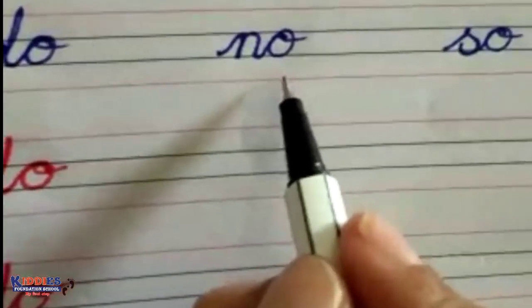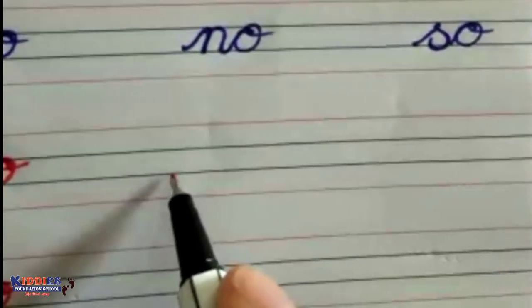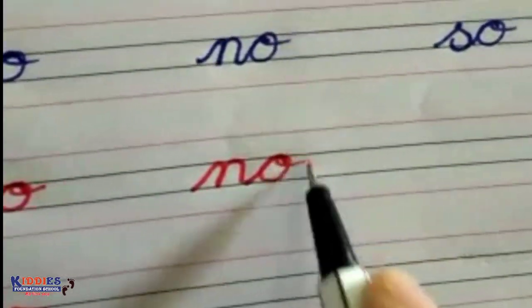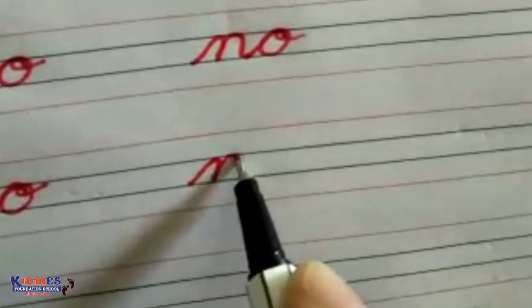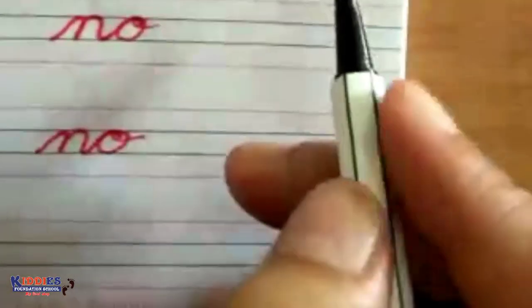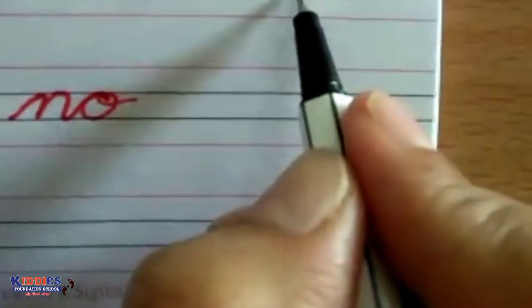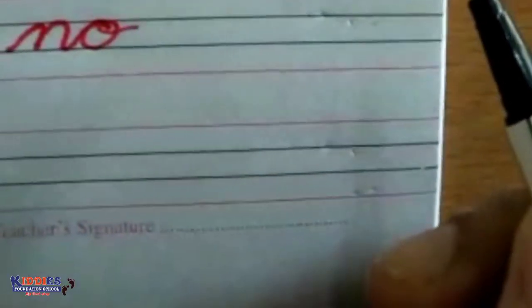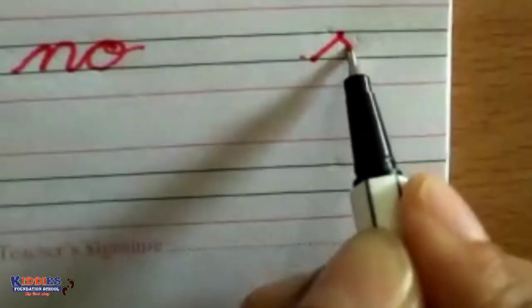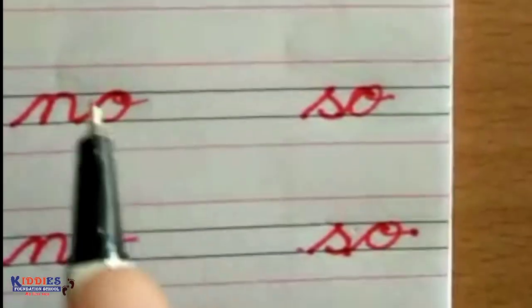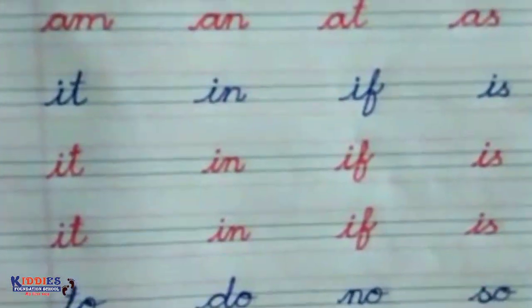Then the word 'no' — for this write the letter 'n' first, then from here 'o', to get 'no'. And the word 'so' — write 's' like this, then 'o', to get 'so'. You can write all two-letter words this way. Thank you for watching.